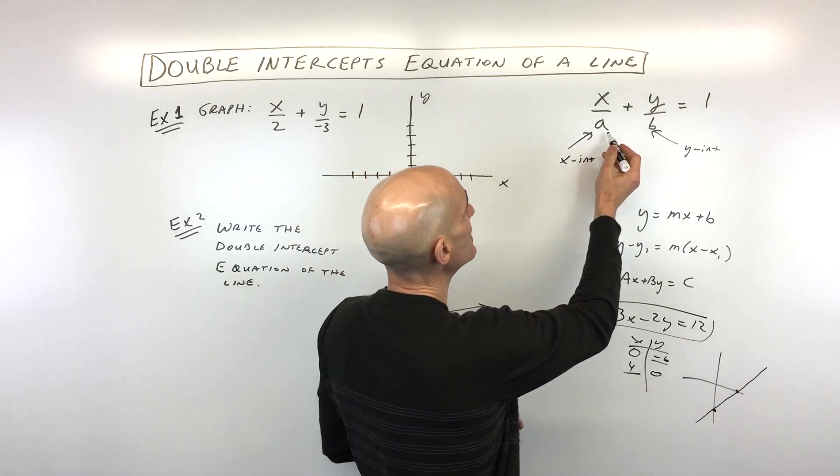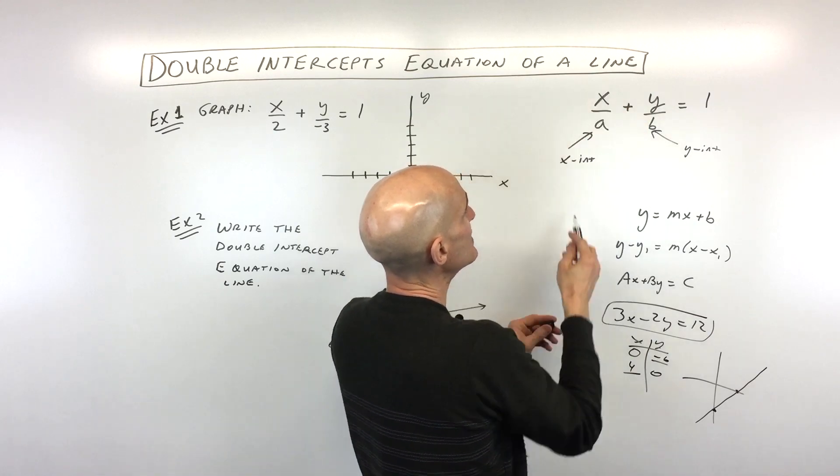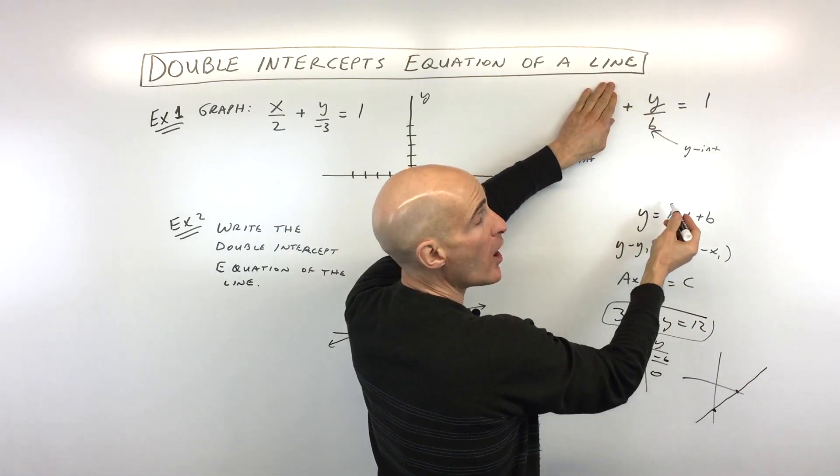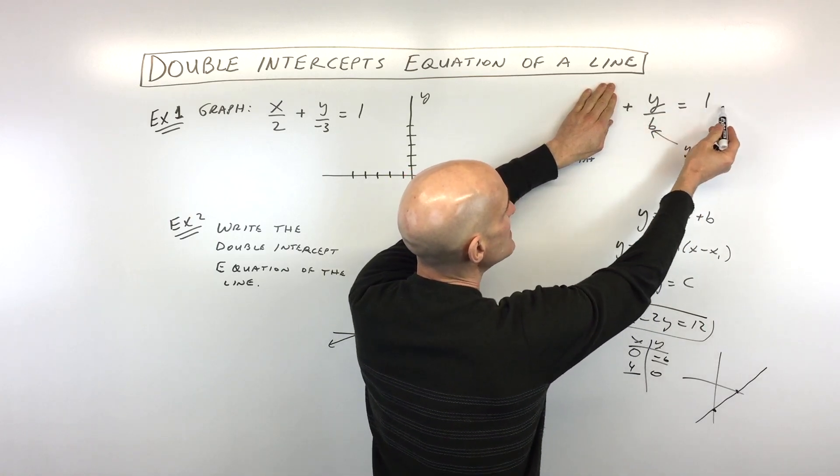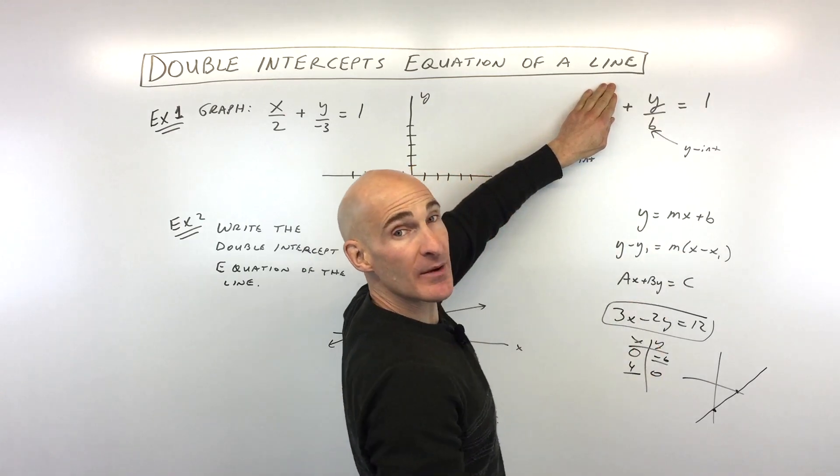Same thing over here. You can see that if we put in 0 for x, 0 divided by a is just going to be 0. And so you can see that we're left with y over b equals 1. By multiplying both sides of the equation by b, we're going to find out what our y-intercept is.